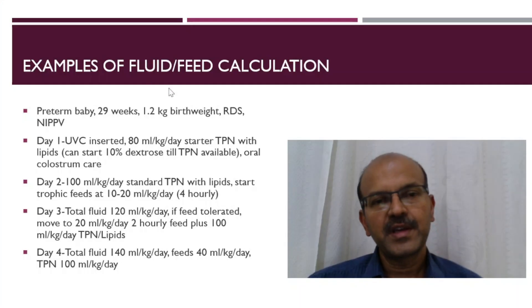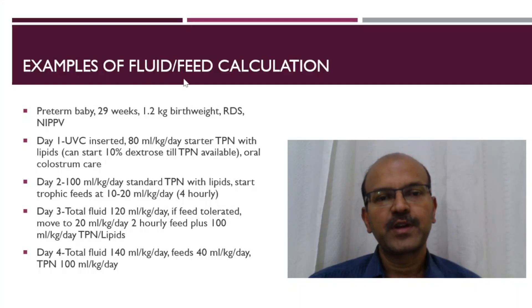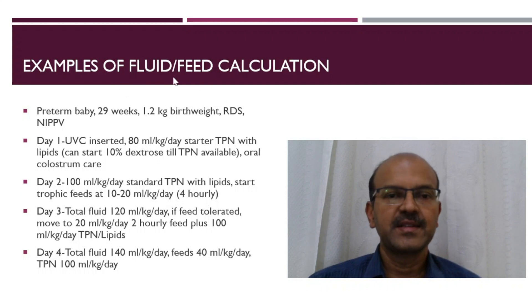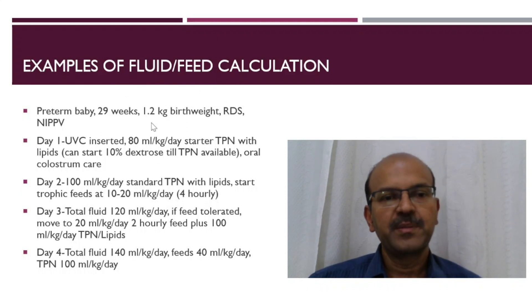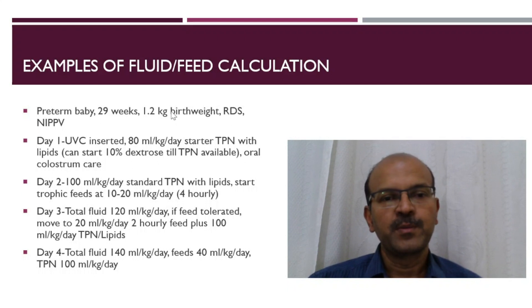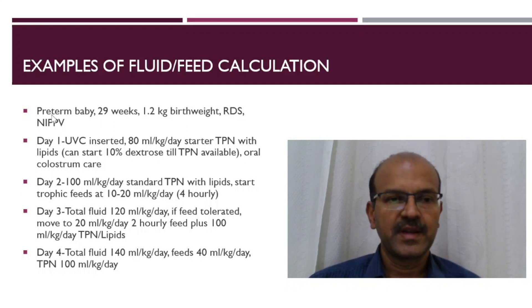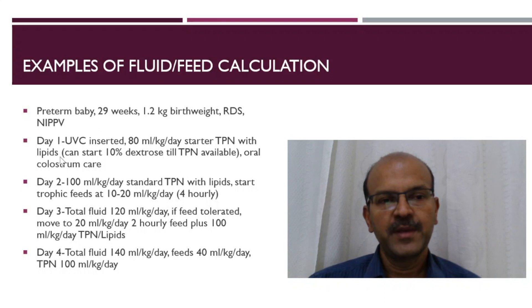So, a quick example of how to calculate the balance of fluids and feeds. A premature baby born at 29 weeks, 1.2 kilo birth weight, had respiratory distress syndrome and is on non-invasive PPV.